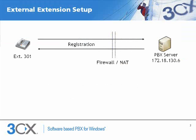We will look at an example where we will be setting up extension 301 to be an external extension. I've already set up my 3CX phone system in the office using a virtual machine, and it's on IP address 172.18.1306. I have already pre-configured extension 301 and the PBX is ready to accept registrations for this extension, and to deliver calls from and to extension 301.